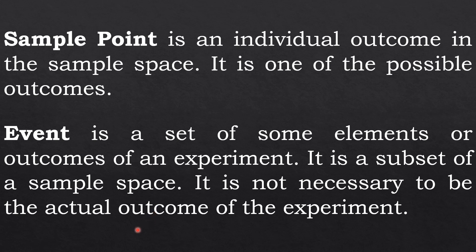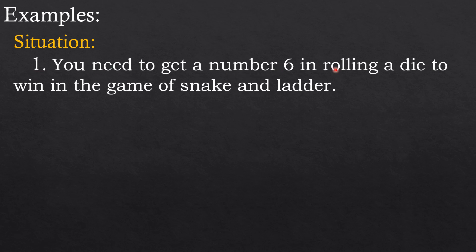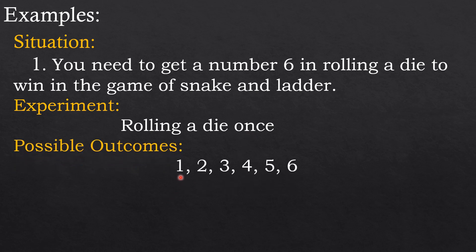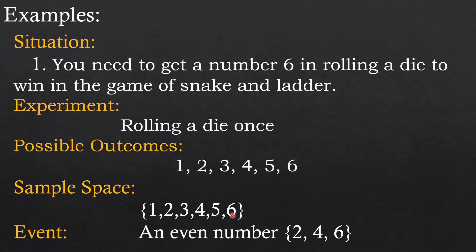Here are some illustrative examples. Example number one: we have the situation - you need to get a number six in rolling a die to win in the game of snake and ladder. The experiment is rolling a die once. The possible outcomes could be these numbers: one, two, three, four, five, six, because when you throw a die these are the possible outcomes. So the sample space are all the possible outcomes, and the event is number two, four, and six.